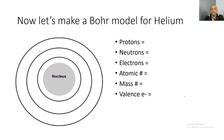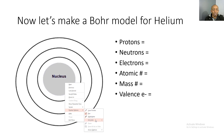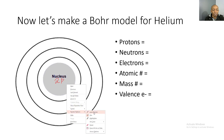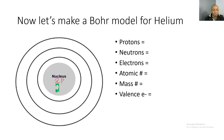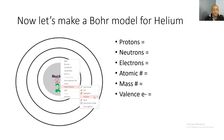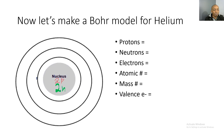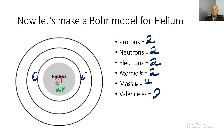Now let's make a Bohr model for helium — you have 30 seconds and I'll pause the video. Welcome back. For helium, you should have put two protons in the nucleus, two neutrons in the nucleus, and two electrons in the electron cloud. Our chart: two protons, two neutrons, two electrons, atomic number 2, mass number 4 (because two plus two equals four), and two valence electrons. Helium is also stable because you can only fit two electrons in the first orbital ring.